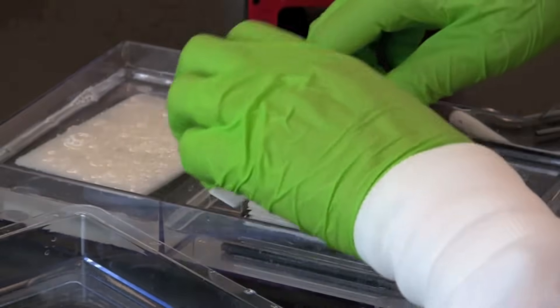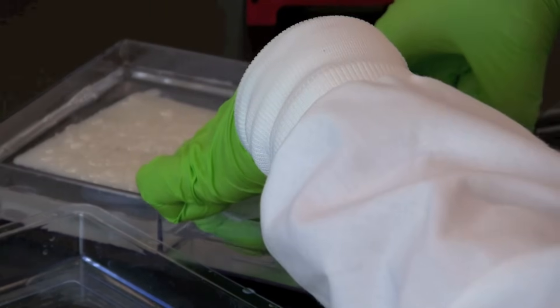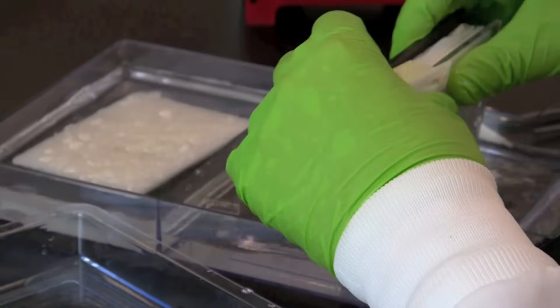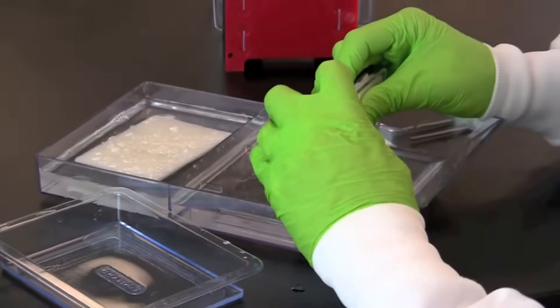Fold the clear plastic side of the gel holder over the sandwich and clamp it to the black plastic side by sliding over the white clip. This tight fit will squeeze the sandwich together.